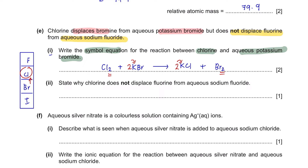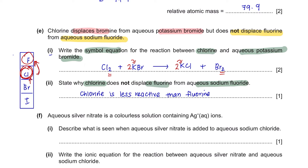Part 2: State why chlorine does not displace fluorine from aqueous sodium fluoride. Since chlorine is placed below fluorine in Group 7, chlorine is less reactive compared to fluorine, so chlorine cannot displace fluorine. Remember that in Group 7, elements become less reactive as you go down the group.